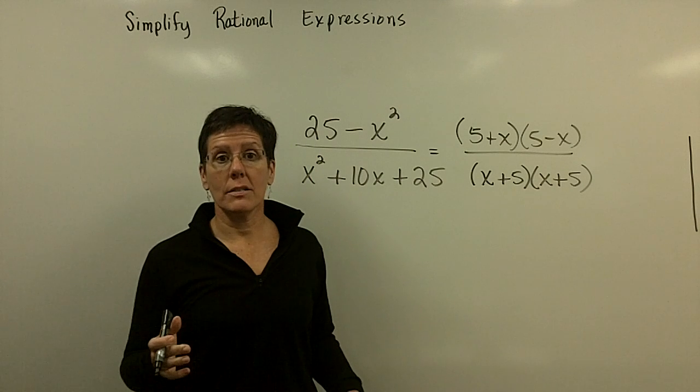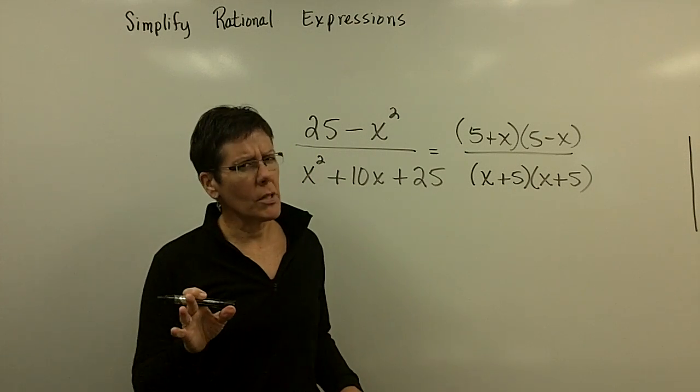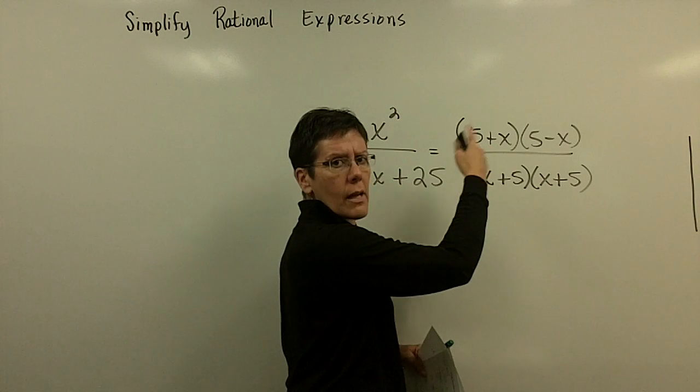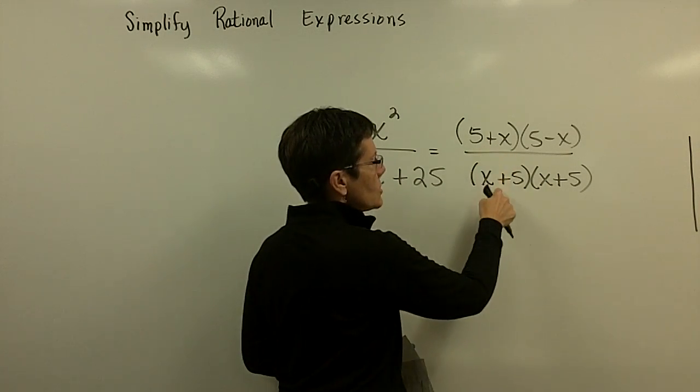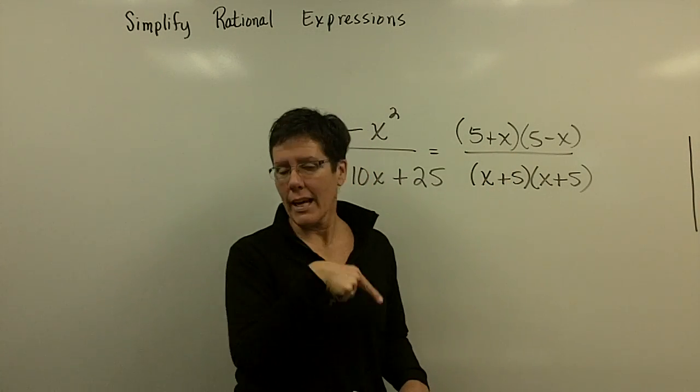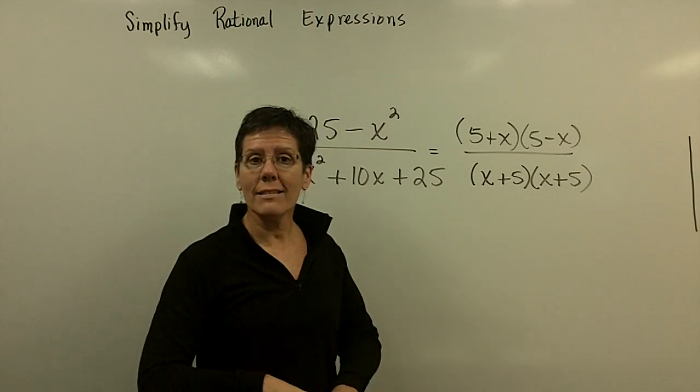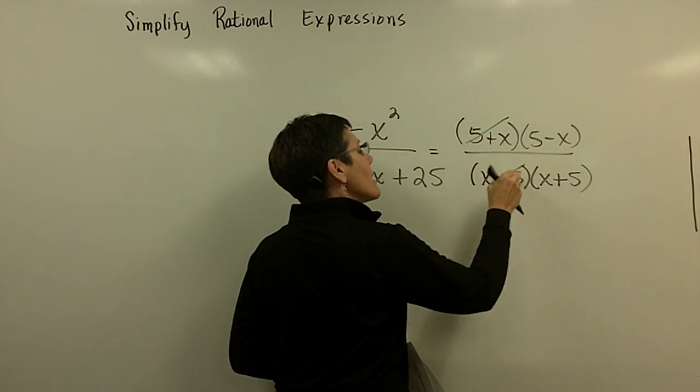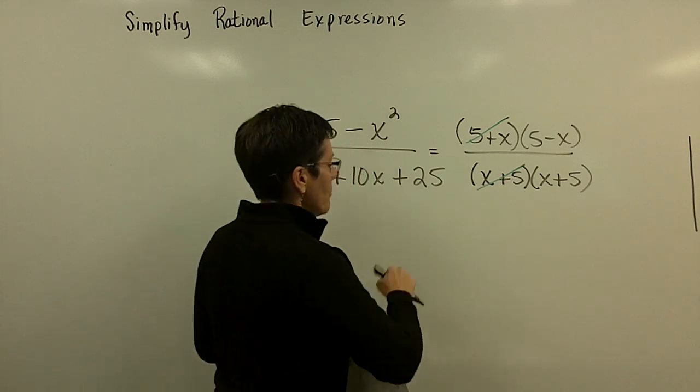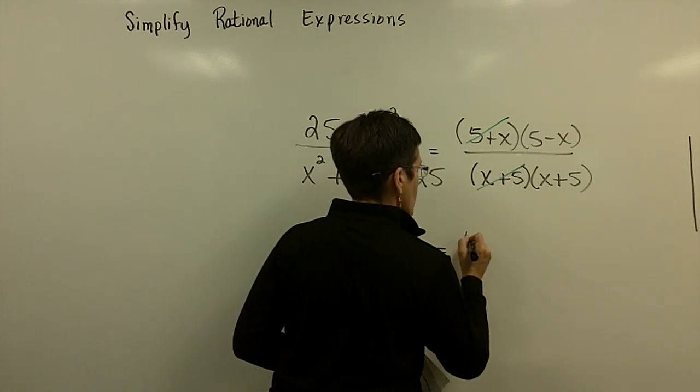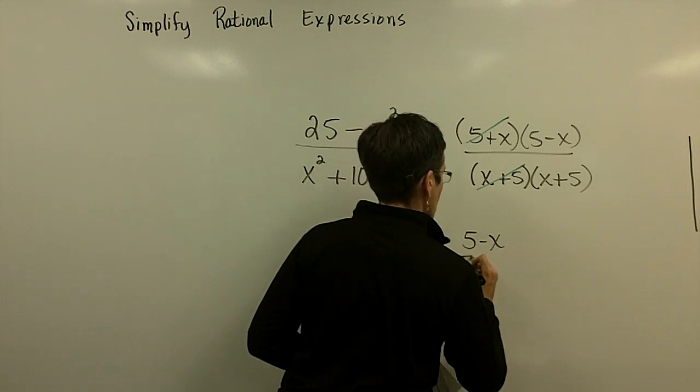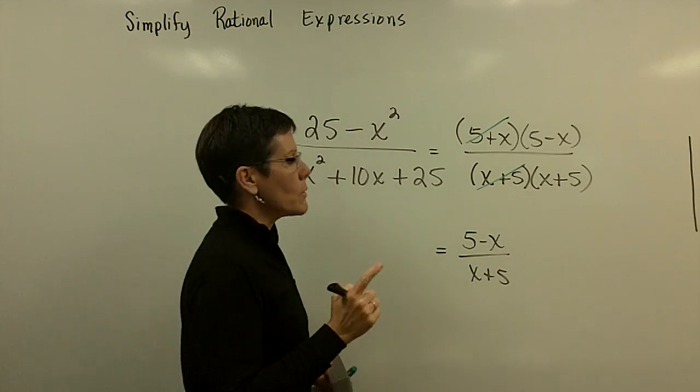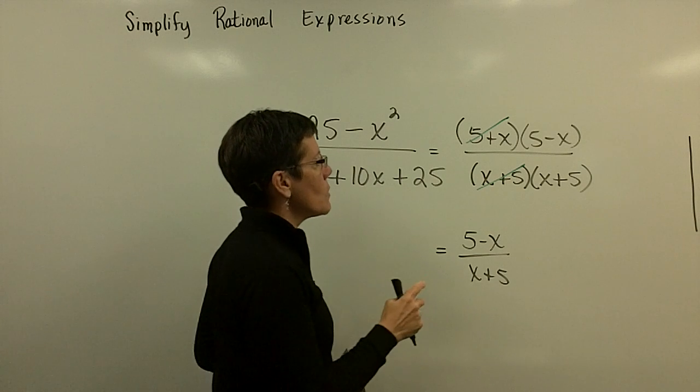And I'm now ready to go about the process of reducing. Addition is a commutative process. It doesn't need to be done in, you know, 5 plus x, x plus 5. These two are exactly the same. So, I thought I had a problem on my notes that was going to be opposites, but they're not. I can reduce those. They are exactly equal to 1. And my final answer for this problem is 5 minus x over x plus 5.